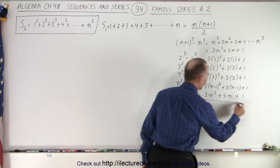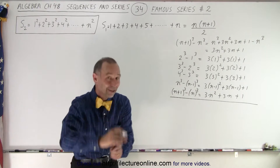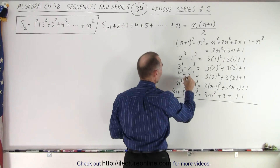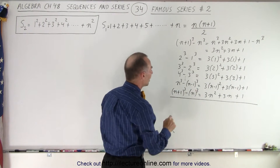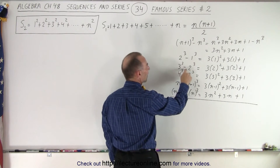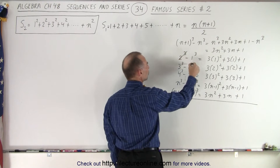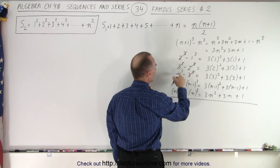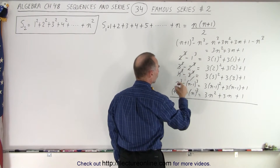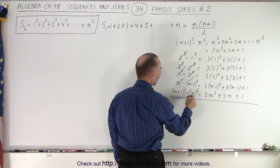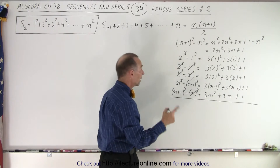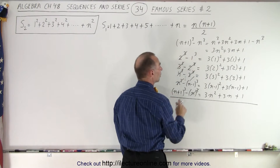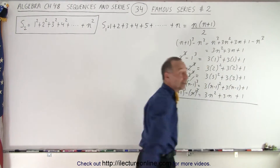Now, what if we add all those up? We add up the left side and the right side of all those equations. Notice: we have 2 cubed and a minus 2 cubed, so those cancel out; this 3 cubed cancels the next 3 cubed; this 4 cubed cancels the next 4 cubed; and the n cubed cancels the n cubed over here. We end up with n plus 1 cubed minus 1 cubed equals the sum of everything on the right side.